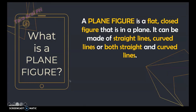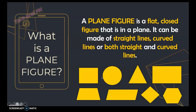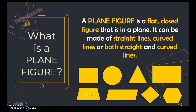Let's compare solid figures to a plane figure. A plane figure is a flat, closed figure that is in a plane. It can be made of straight lines, curved lines, or both. Some examples of plane figures are: square, circle, triangle, rectangle, trapezoid, parallelogram, rhombus, and hexagon.